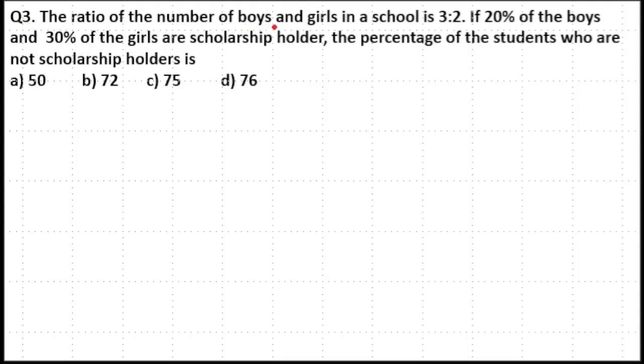The ratio of number of boys and girls in a school is 3 to 2. If 20% of boys and 30% of girls are scholarship holders, the percentage of students who are not scholarship holders is: